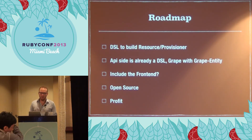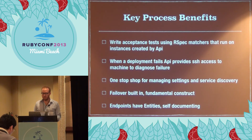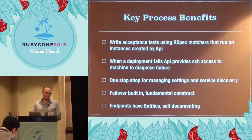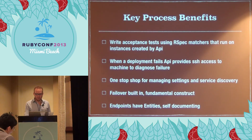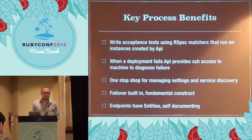The goal is definitely to open source the work we've done. So, what are the key process benefits? We write acceptance tests using RSpec matchers that run on the instances created by the API — that is really big. Because we could have had a broken deployment for weeks and had no idea previously, since we weren't constantly testing our deployment infrastructure. When a deployment fails, we have SSH access to the machine. We have a one-stop shop for settings and service discovery. Failover is a fundamental construct — swapping clusters back and forth.